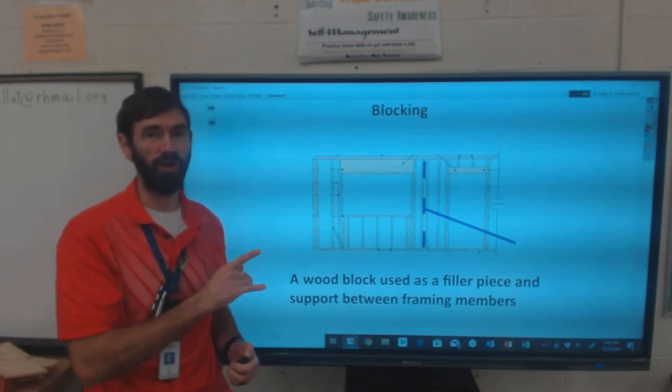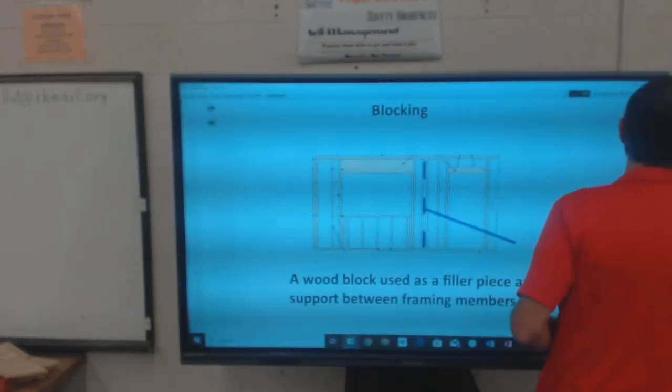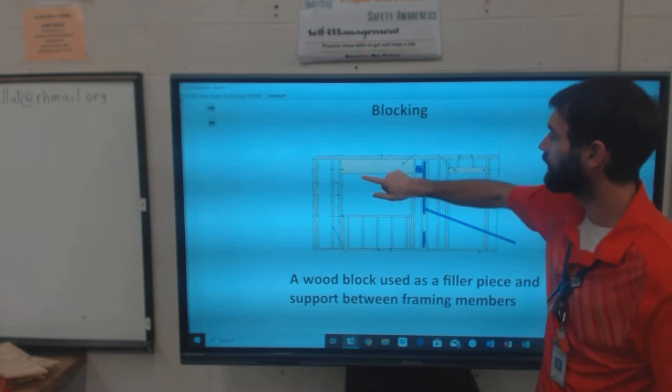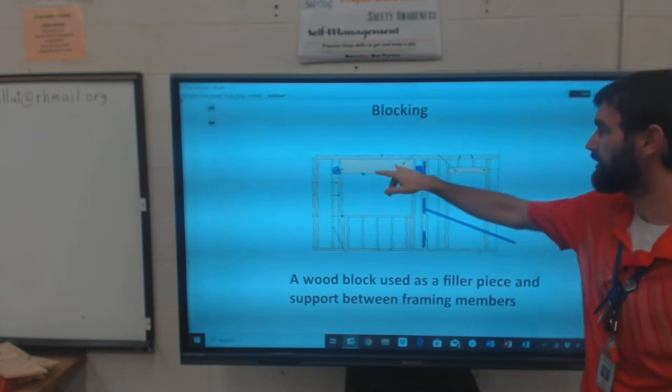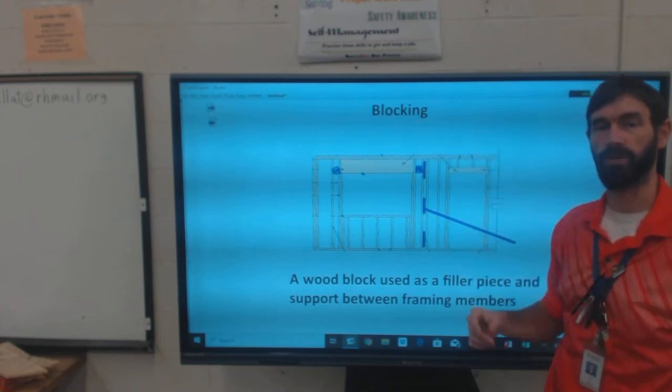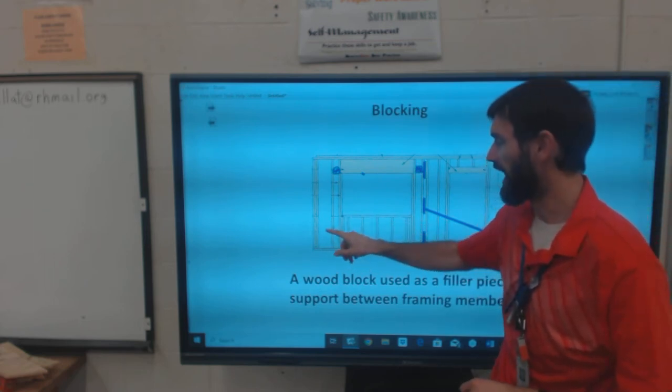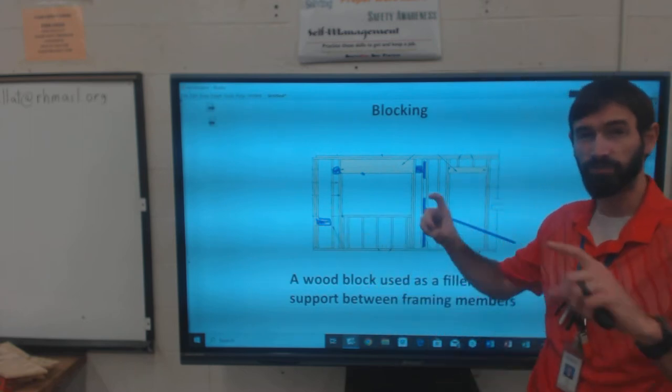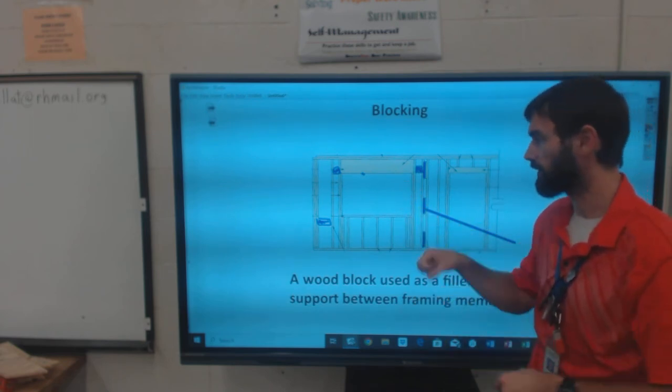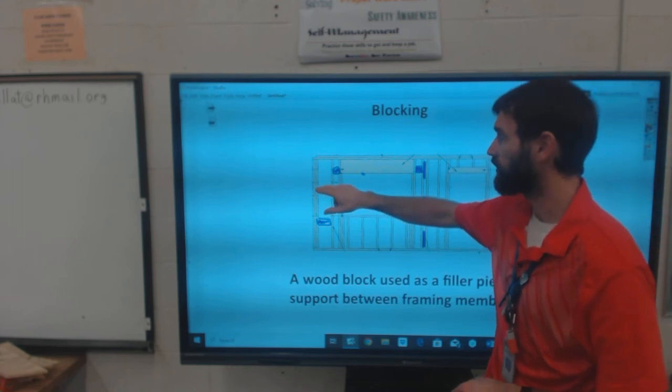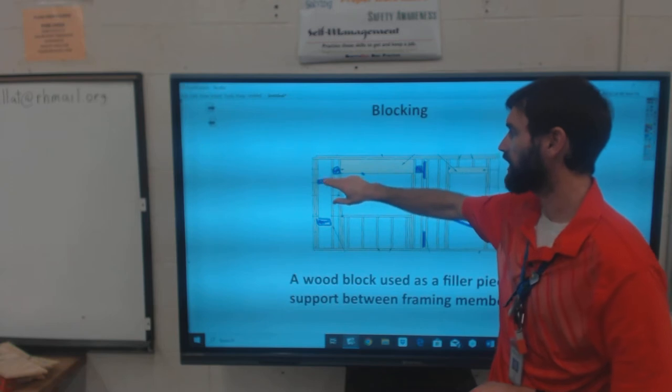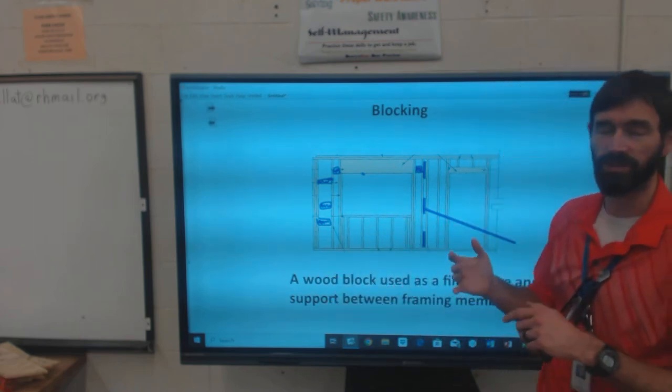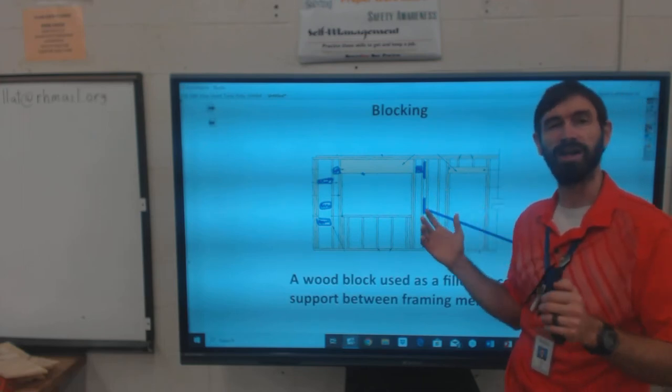This is not the only place you find blocking. A quality contractor will have the crew put in blocking up at the tops of the windows to catch curtains - it's better support than just drywall anchors. Or in a bathroom, they'll put a piece of blocking there for your toilet paper holder, or blocking up there for your shower head and down here for the handle. So there's a lot of places you can put blocking in, but oftentimes it's just a place that fills the space between two framing members and provides a little extra support.